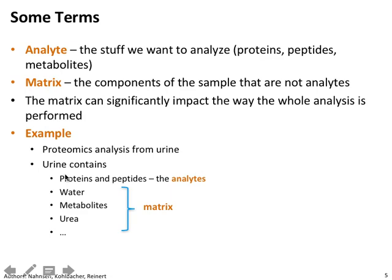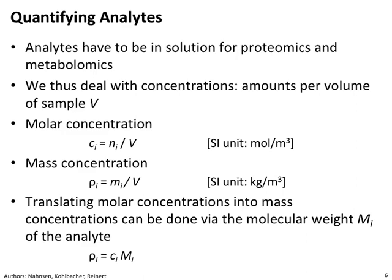If you want to do urine proteomics, there are of course the proteins and peptides you want to find, but you also have water, metabolites, urea, and lots of other things you do not care for. You can get rid of part of this matrix as part of pre-analytic sample treatment, but you can also do that later on if your instrumentation has enough discrimination power. The more complex your matrix, the harder it is to find what you really want to see — it's the difference between the needle lying on a table and the needle in a haystack.